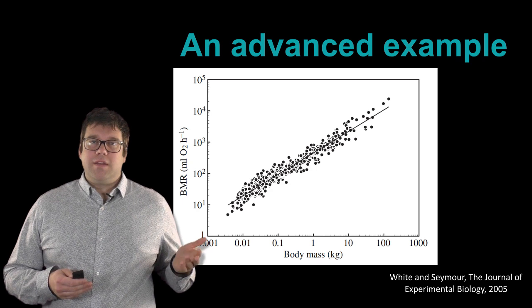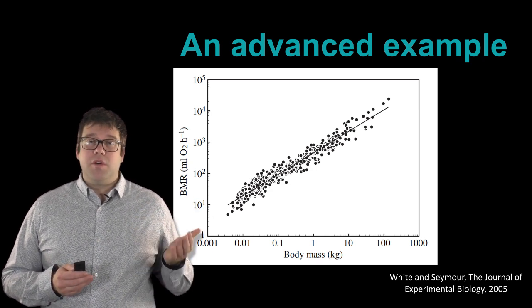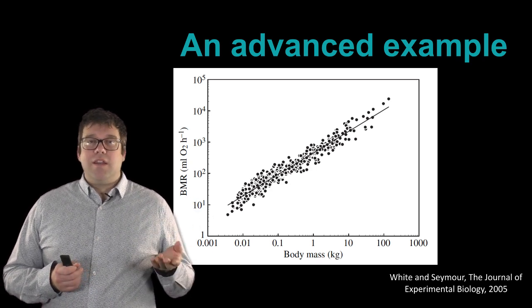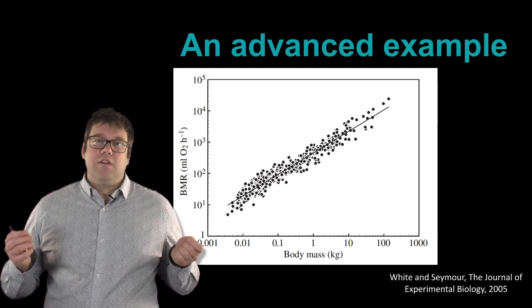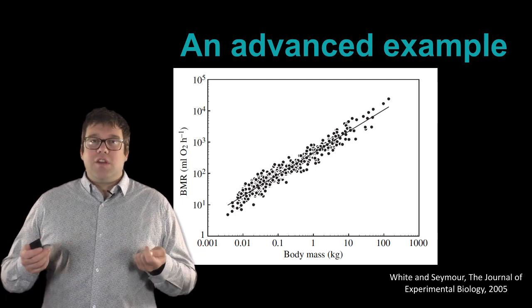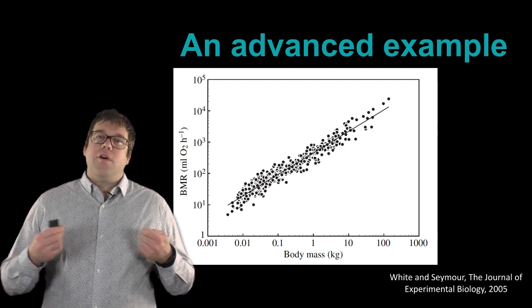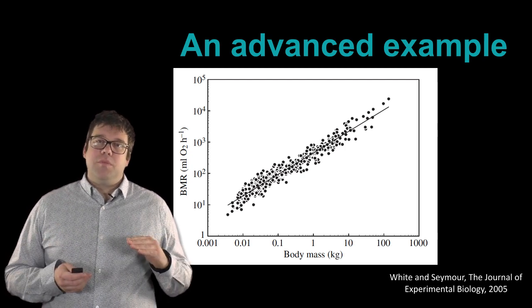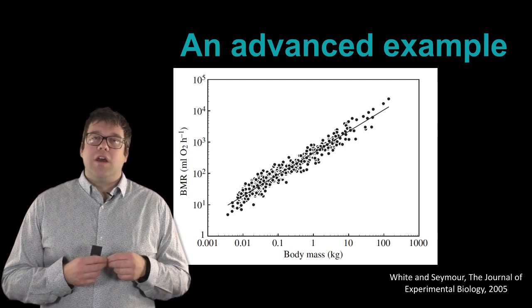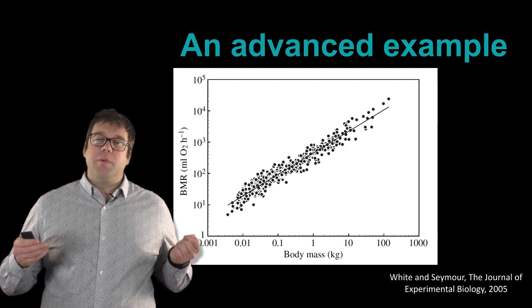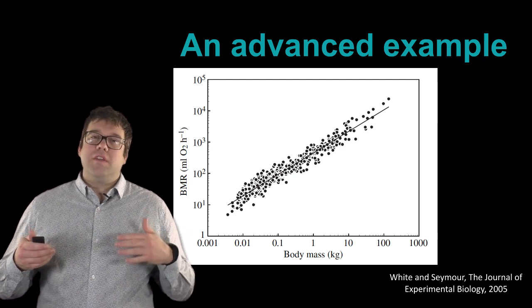And what's nice is that the exponent of this power law is three quarters, which means it's not one. This isn't some proportionality where you double the body mass, you double the metabolic rate. So this tells us that there may be something interesting going on. And it also says that despite all of the diversity of mammals, all of the different strategies that mammals have, at this largest scale of evolution, there's one constraint that's organizing this macroscopic behavior of biology. We might almost call this a law for mammals.